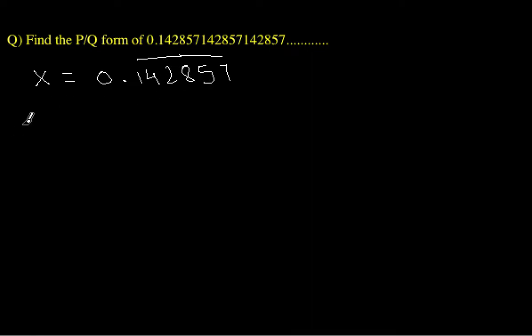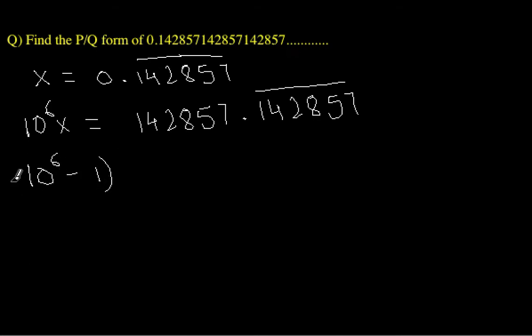We multiply x by 10 raised to power 6, so we get 142857.142857 bar, and this will again be recurring. Now we simply do 10 to the power 6 times x minus x, so we subtract this x value from this one to remove the recurring part.